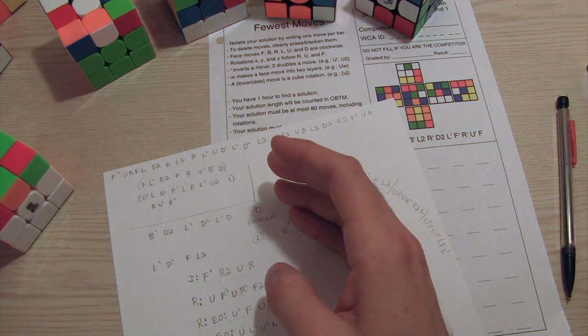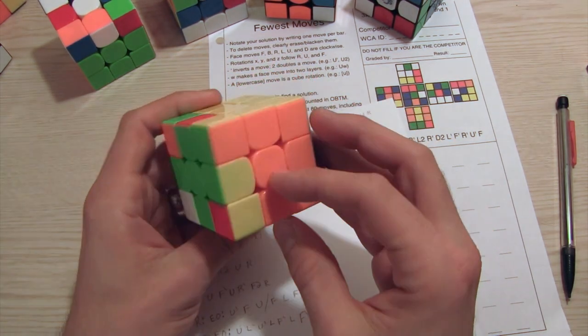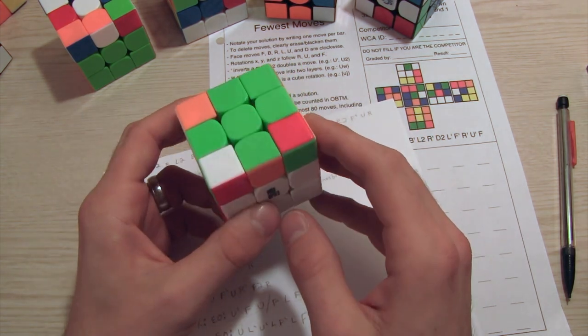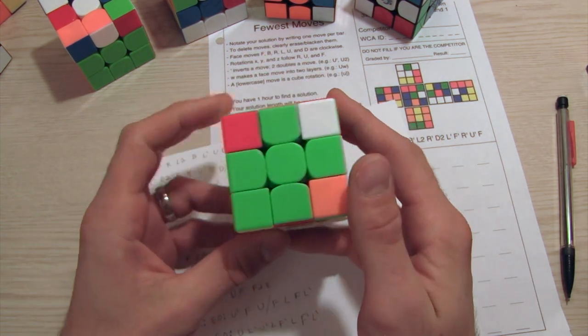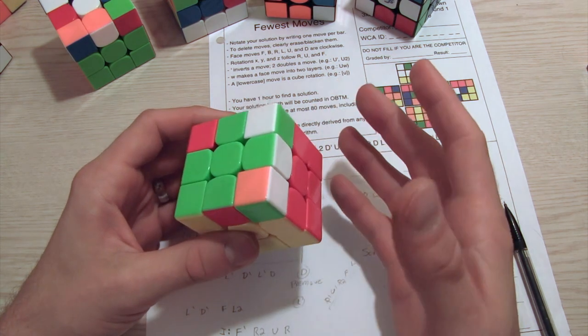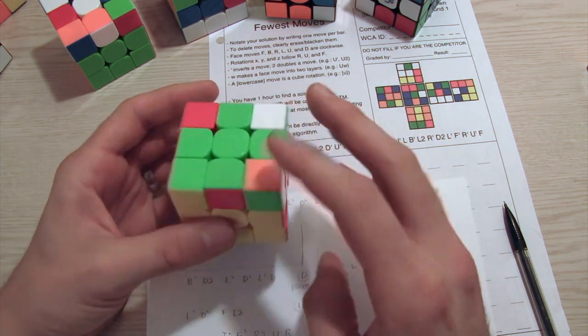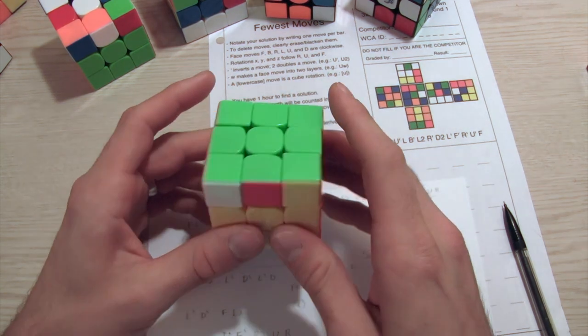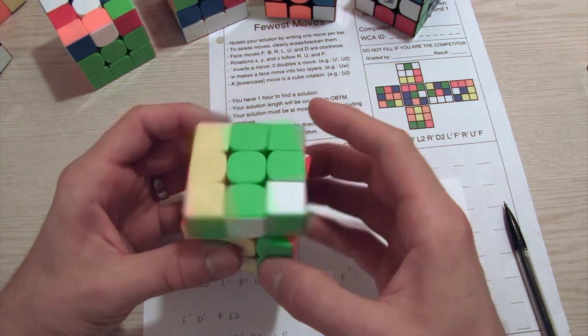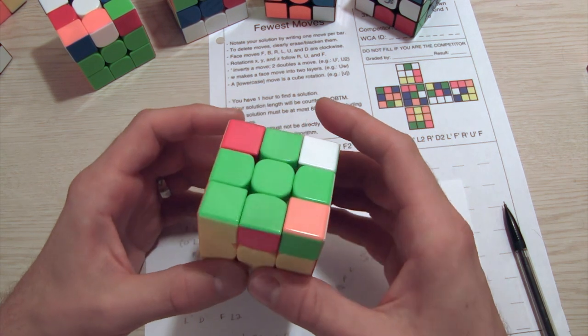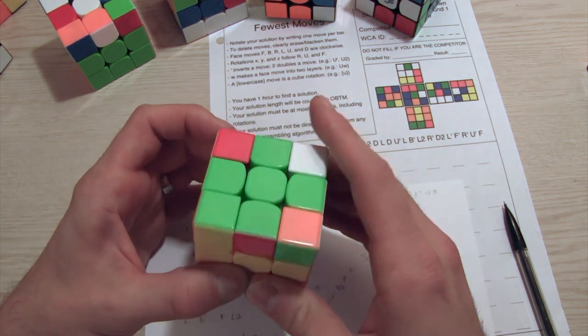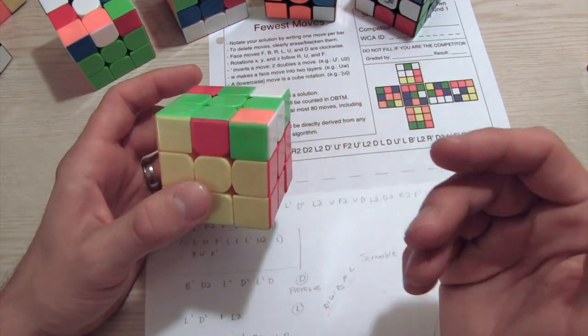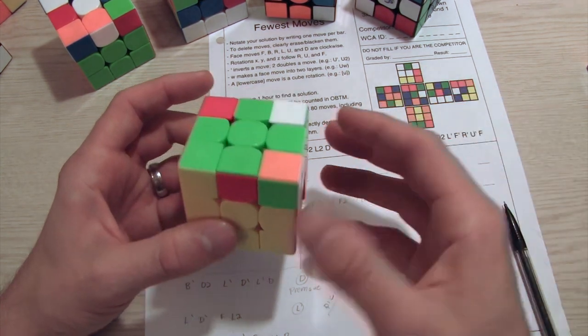So now, right here, we've got a couple options for commutators we can do. And we could just do a normal OLL and then PLL, like this would be a sune case. And that leaves us with a Z permutation, which isn't really the greatest thing ever.